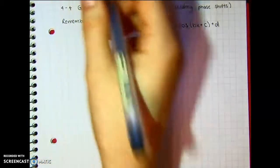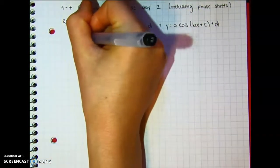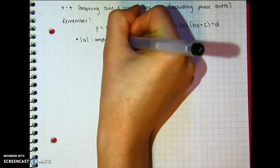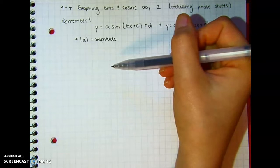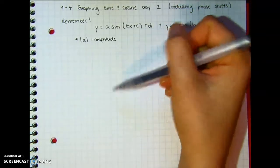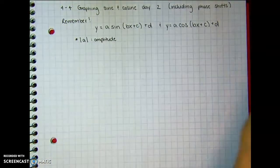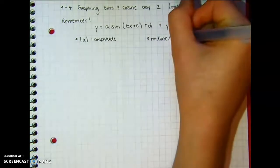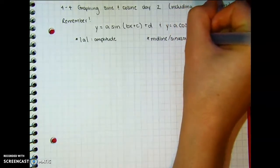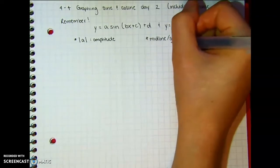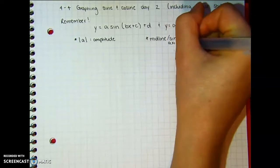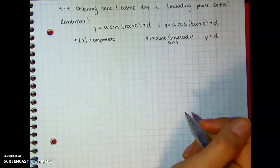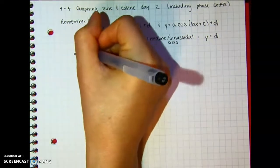So if you remember back to the other day, A, or the absolute value of A, is going to be your amplitude, which is the distance between that axis, the sinusoidal axis and the max, the sinusoidal axis and the min. The midline or sinusoidal axis is y equals whatever D is. Then we have the period, which is 2π over B.